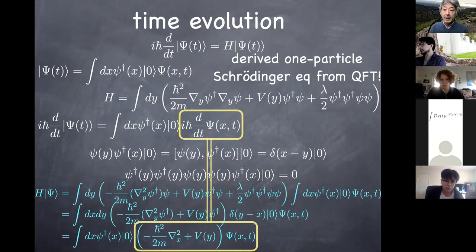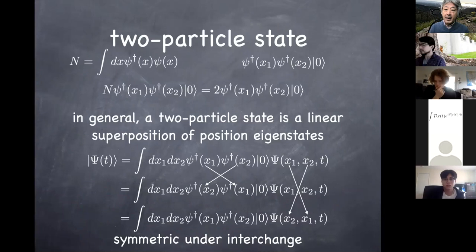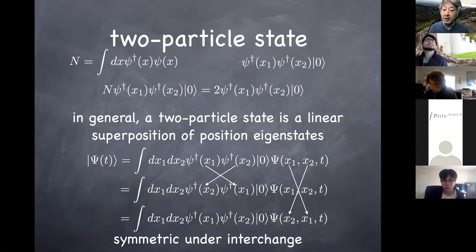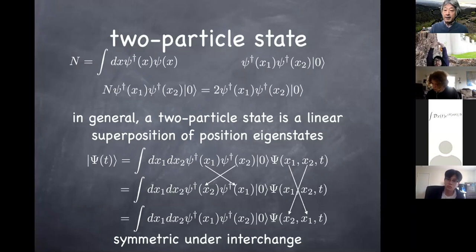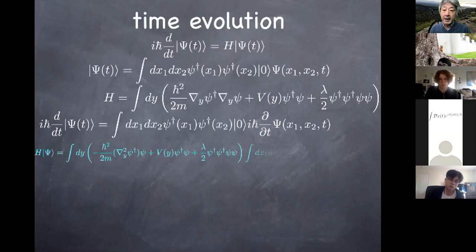We then studied the two-particle state using two creation operators. First, you verify it's an eigenstate of the number operator with eigenvalue two — indeed a two-particle state. An arbitrary two-particle state is a linear superposition of localized two-particle states. One thing we see right away is that the coefficient function is automatically symmetrized, so the symmetry of Bose statistics for identical particles is already built into the formulation — which is already one step better than standard quantum mechanics, where you have to impose wave function symmetry by hand.